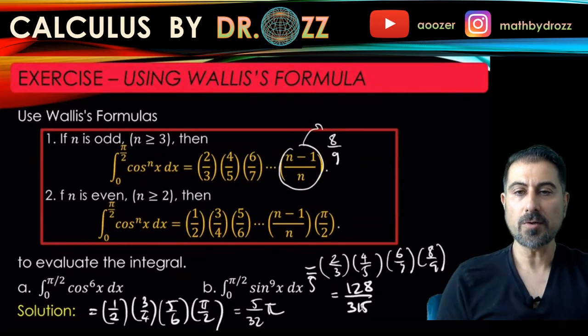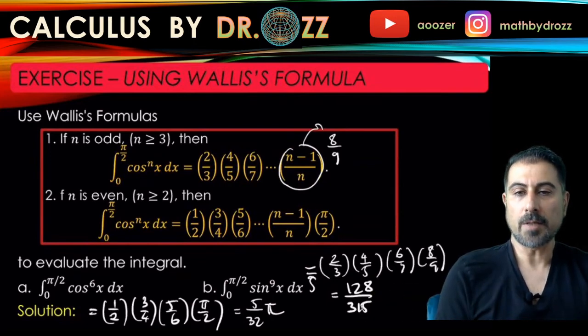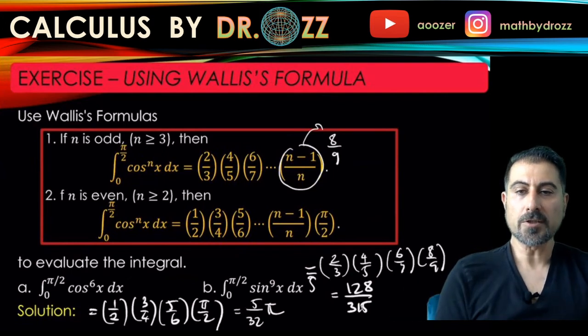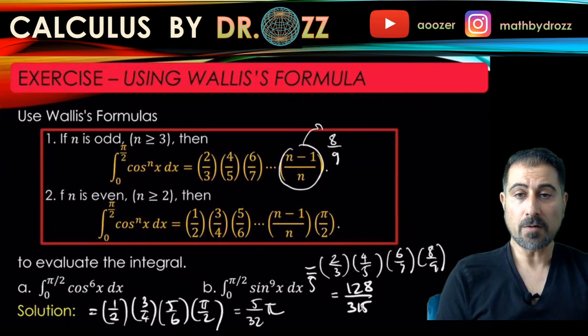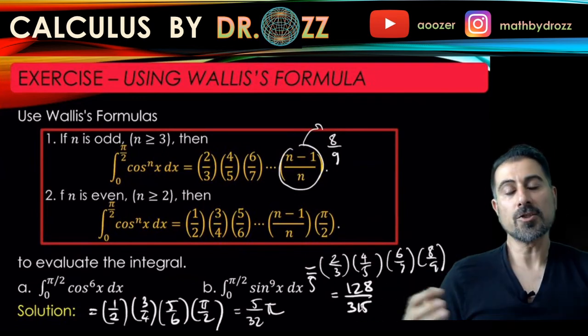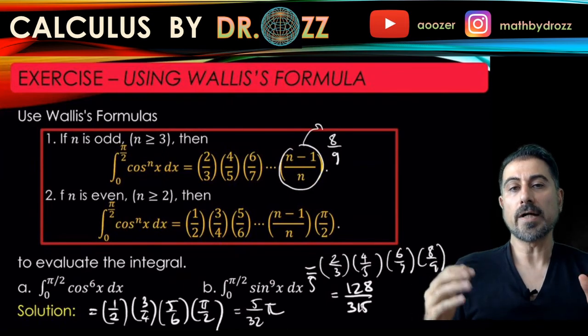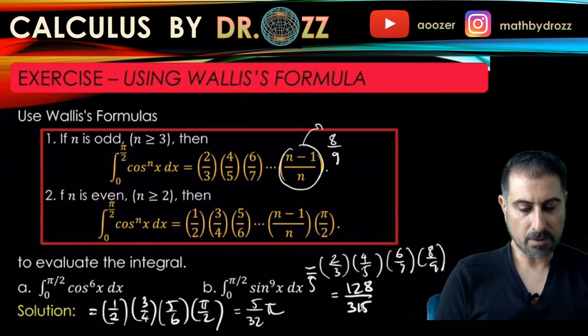Wallis's formula is quite strong, and you can apply this formula to other functions, other sine or cosine functions raised to the power of n, and could be even or odd. The only thing you have to pay attention is that the interval has to be 0 and pi over 2. And if you just pay attention to that, you get the result in one shot.